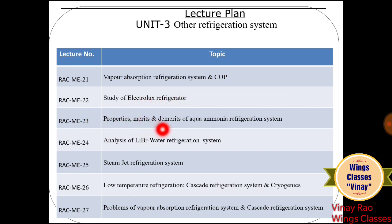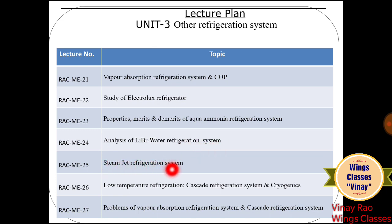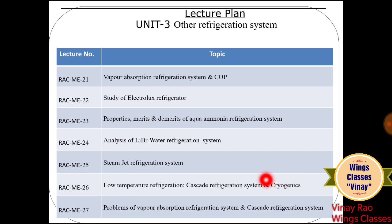Lecture 23 covers Properties, Merits, and Demerits of the Aqua Ammonia Refrigeration System. Lecture 24 covers Analysis of the Lithium Bromide Refrigeration System. Lecture 25 covers the Steam Jet Refrigeration System. Lecture 26 covers Low Temperature Refrigeration, Cascade Refrigeration System, and Cryogenics — including liquefaction of hydrogen, helium, nitrogen and other gases. Lecture 27 covers problems on Vapor Absorption Refrigeration System and Cascade Refrigeration System.